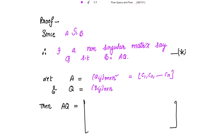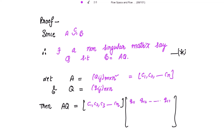We need to multiply these two matrices A into Q. A is written as c1, c2, c3 up to cn, and matrix Q has elements q11, q12, up to q1n in the first row, second row entries, and so on up to the nth row, nth column. This is how the elements are present in their positions.